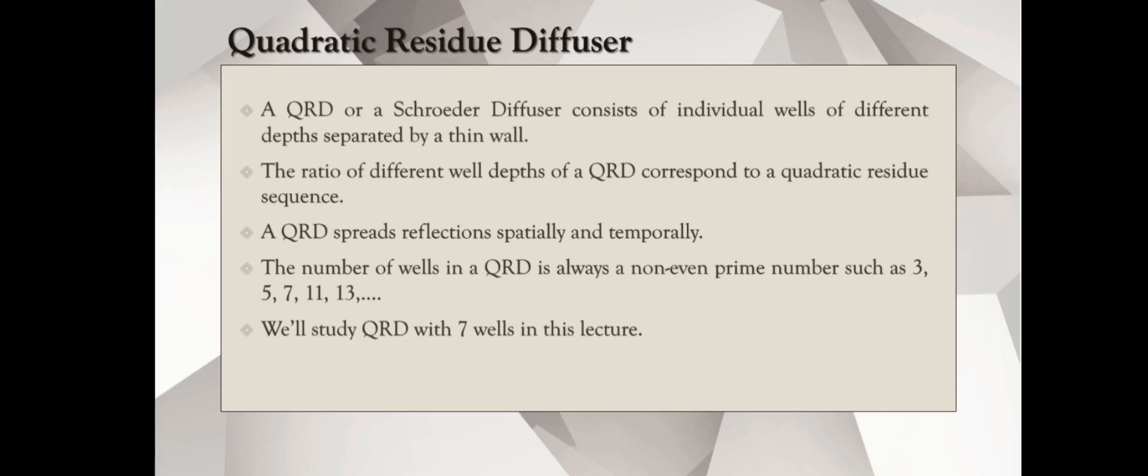A QRD spreads reflections spatially and temporally. It spreads the reflections spatially, meaning it distributes the sound energy over the entire space, but also it distributes in time, meaning it changes the phase while reflecting, while it is spreading out the sound energy evenly. The number of wells in a QRD is always a non-even prime number, such as 3, 5, 7, 11, and so on. 2 is a prime number, but it is an even prime number, so we only want non-even prime numbers.